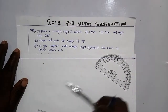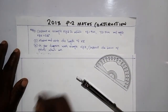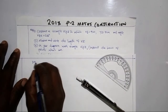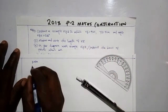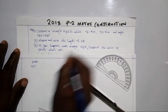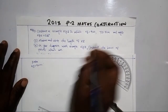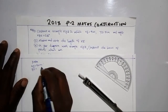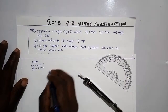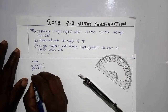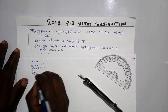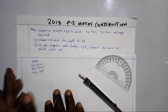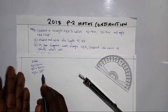For the solution, we are constructing a triangle. First, we have to analyze the data which has been given. So we write the data: XY equals 9 centimeters, YZ equals 7 centimeters, and angle XYZ equals 80 degrees.